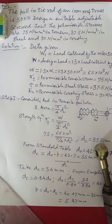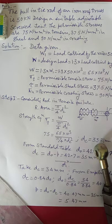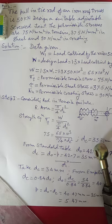Good morning friends. In this session we will take the numerical on turn buckle. The problem is given: the pull in the tie rod of an iron roof truss is 50 kilo newton. Design a suitable adjustable screwed joint. The permissible stresses are 75 newton per mm square in tension, 37.5 newton per mm square in shear, and 90 newton per mm square in crushing.